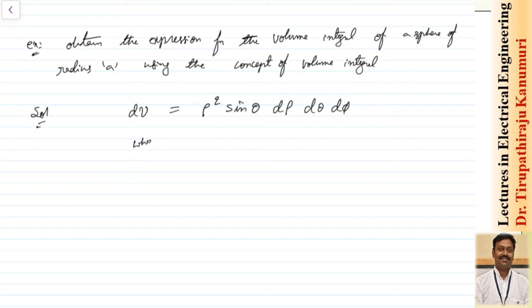Here these values are: theta will vary from 0 to π, so 0 ≤ θ ≤ π.